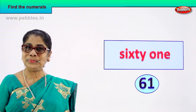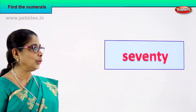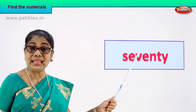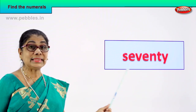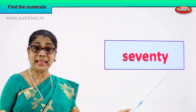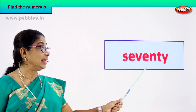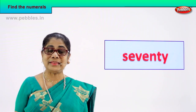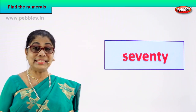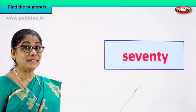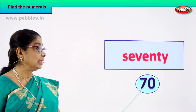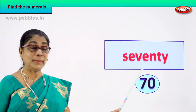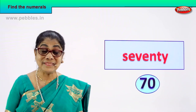Yes. Look what you have here. Spell and tell me: S-E-V-E-N-T-Y, seventy. Spell again: S-E-V-E-N-T-Y, seventy. How do you write the numeral 70? 7 and 0 — 70. 7 and 0 — 70. You found the numeral for this number name: 7 and 0, 70. Good.